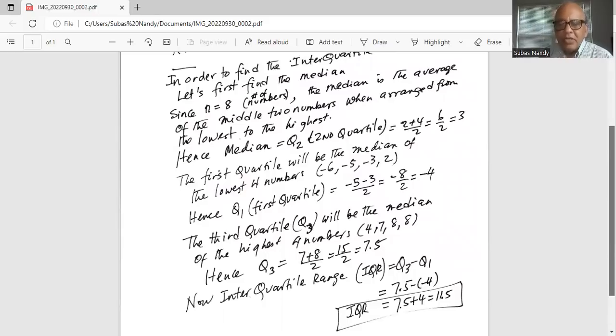...which tells us about the middle location or the range of the middle 50 percent of the numbers, how widely the numbers in the middle 50 percent of the data set are spread out, is given by IQR. So the spread of the middle 50 percent of the numbers is given by IQR, which in this case is 11.5.